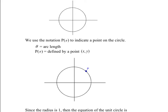The theta would be the arc length from the starting point here. Don't forget this is always the starting point of an angle, then going around. And the point would be the coordinates x and y of that point on the unit circle.